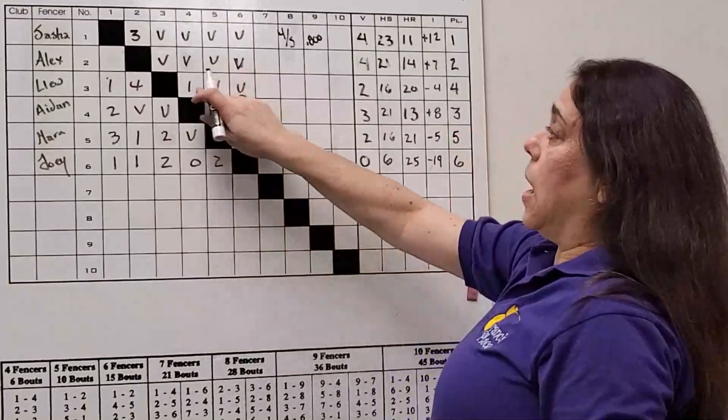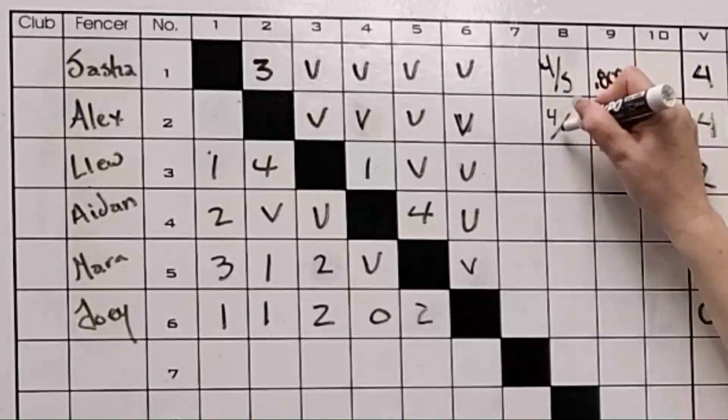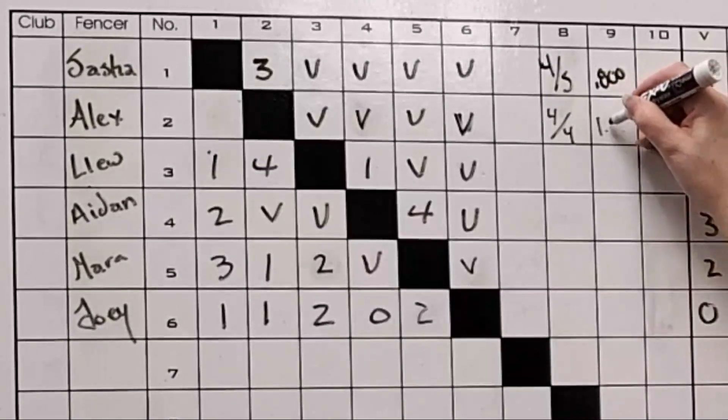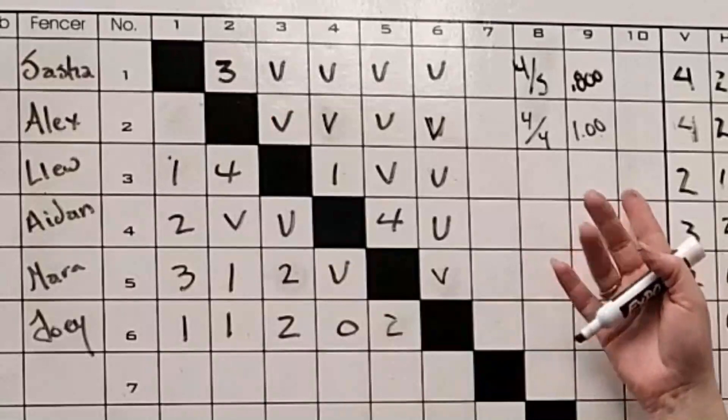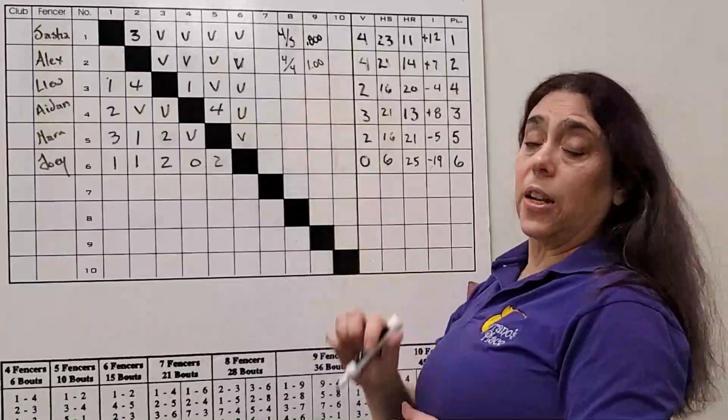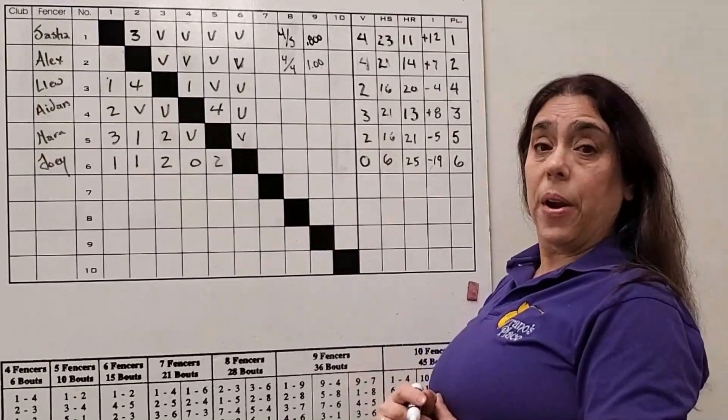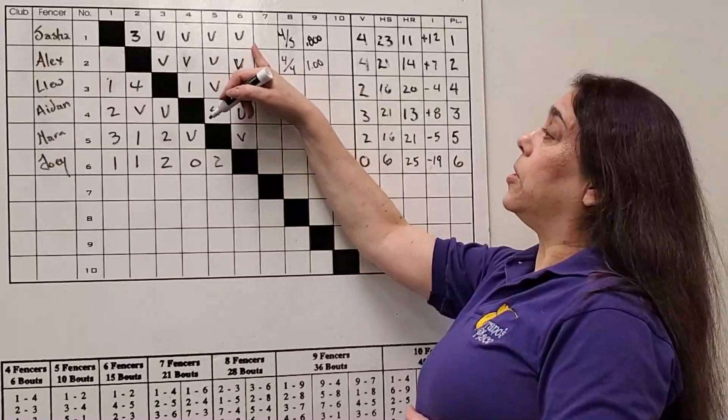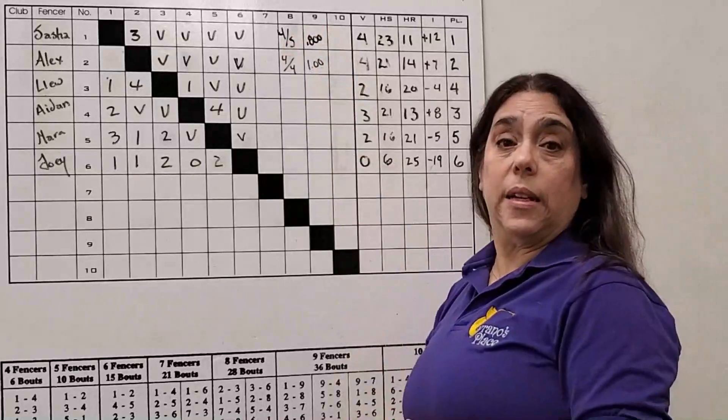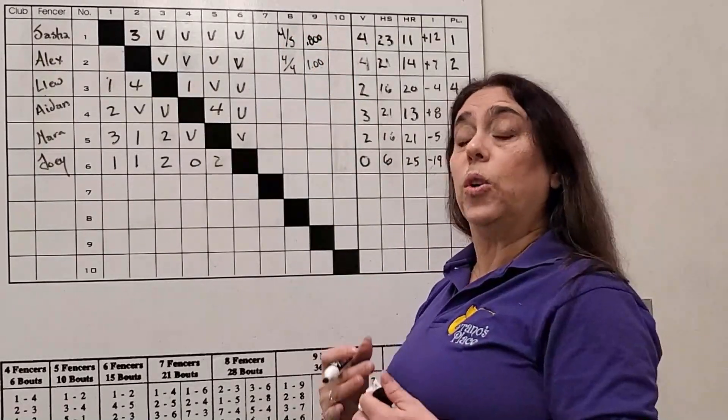What that means is if we do a percentage of the victories, we can compare results from somebody in a pool of five versus a pool of six and find out where they seed relative to each other, which will be important when we go to the direct elimination.